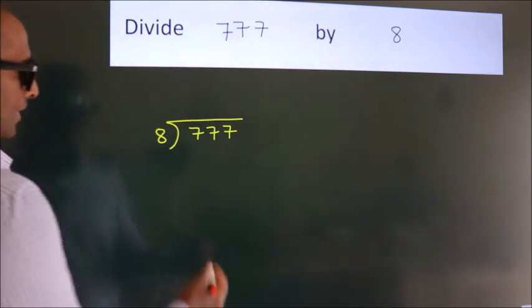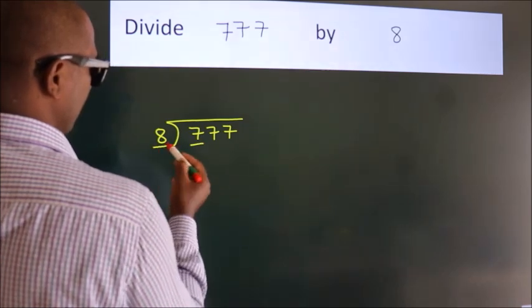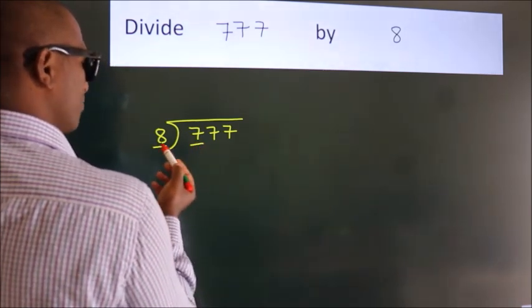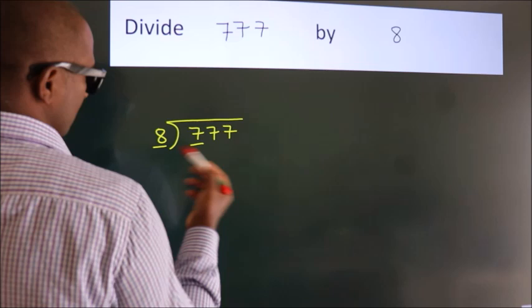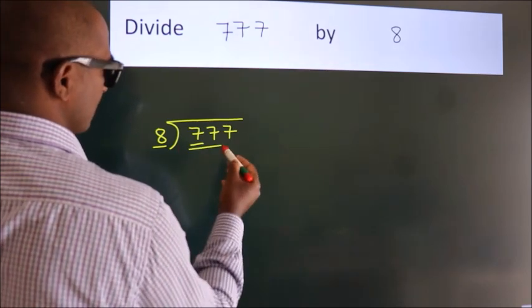Next. Here we have 7, here 8. 7 is smaller than 8, so we should take two numbers: 77.